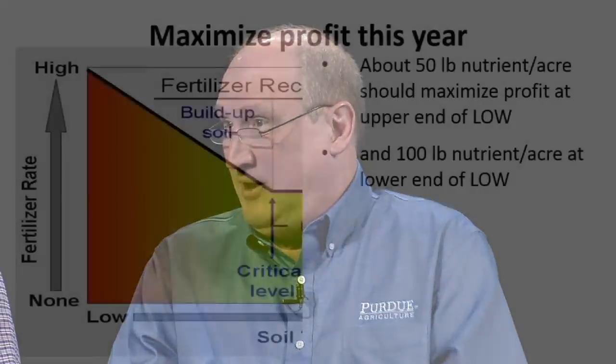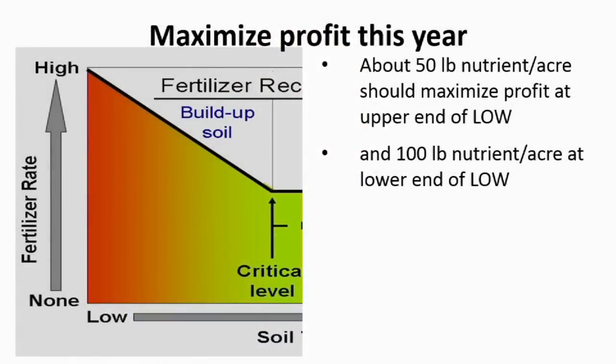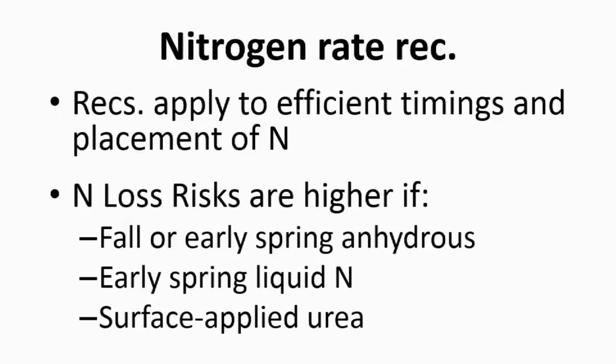This is a classic case of weighing benefits and costs. In the low category, you're going to get some yield response — that's a benefit. With every input, we need to think about the benefit this year and long-term versus the cost; the benefit must outweigh the cost. Now let's switch our attention to nitrogen rates. Nitrogen is more often needed than phosphorus and potassium. There's no good soil test for determining nitrogen availability in the eastern Corn Belt, and most fields require nitrogen to make optimum profits.